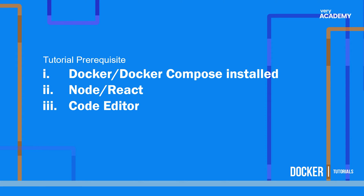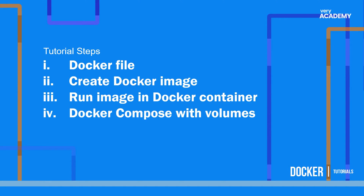If you are new to this Docker series, you're going to need Docker and Docker Compose installed, so go ahead and install those from the Docker website. We're running React so we're going to need Node, npm, and Create React App, and of course a code editor. To quickly run through what we're going to do: we're going to build a React application, create a Dockerfile, create a Docker image, and then run that image in a Docker container — therefore having React running in a Docker container.